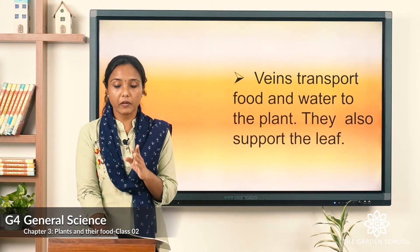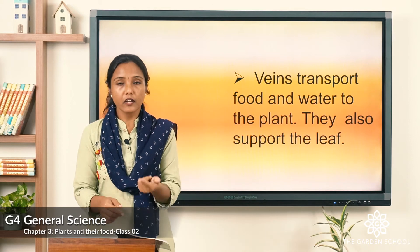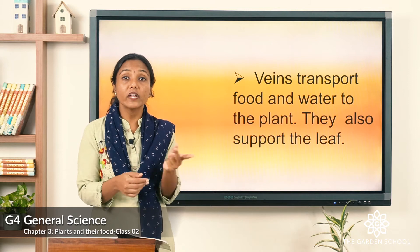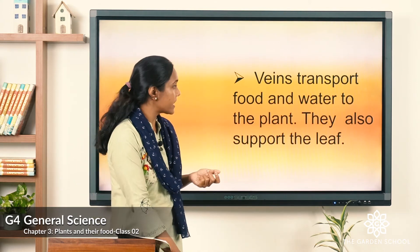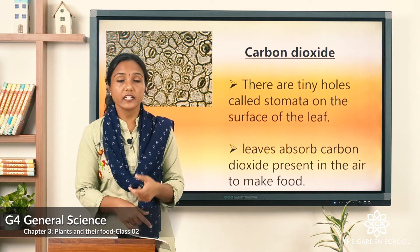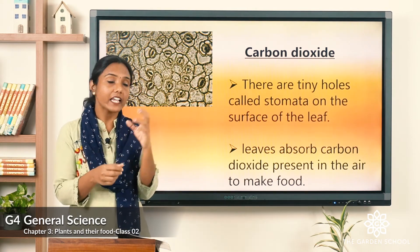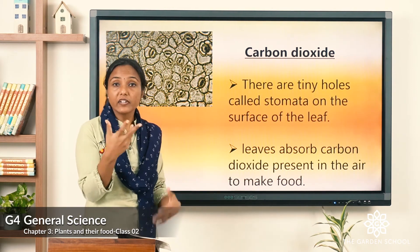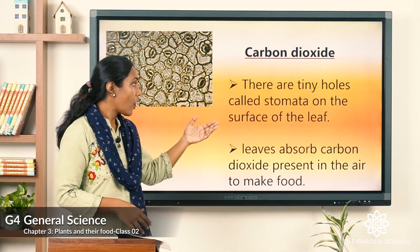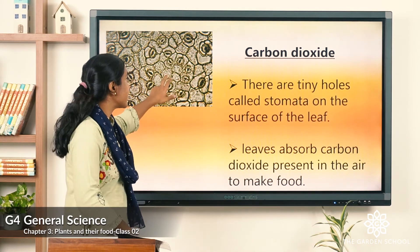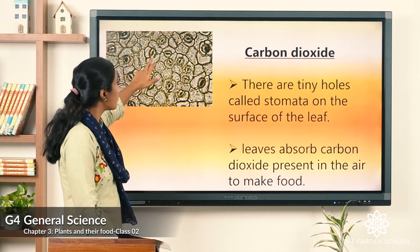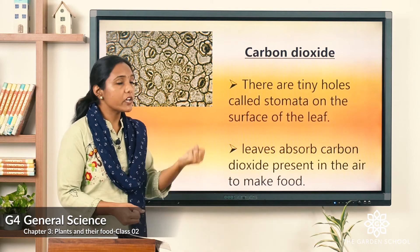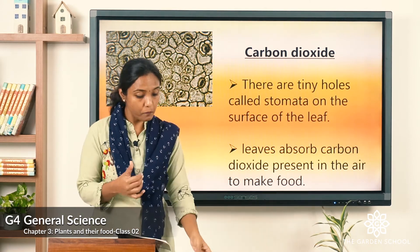We learned how plants get sunlight, water, and about leaf veins. Now let us see how plants get carbon dioxide. There are tiny holes called stomata on the surface of the leaf. These pores absorb carbon dioxide from the air to make food.